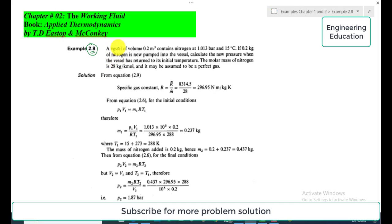The statement of Example 2.8 is: A vessel of volume 0.2 cubic meters contains nitrogen at 1.013 bar and 15 degrees centigrade. So the volume of the vessel is V = 0.2 cubic meters. This is the given data: pressure P₁ is 1.013 bar and temperature T₁ is 15 degrees centigrade.